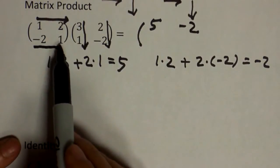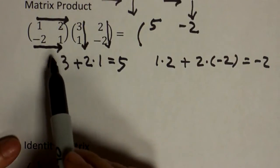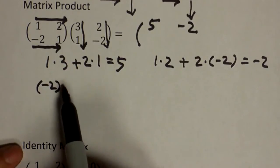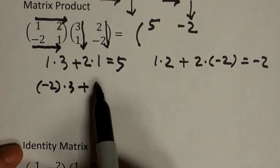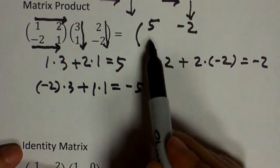And if you're done with all the columns, then you go to the next row, across, down again. And you do negative two times three plus one times one, which is negative five. So let's just put that here.